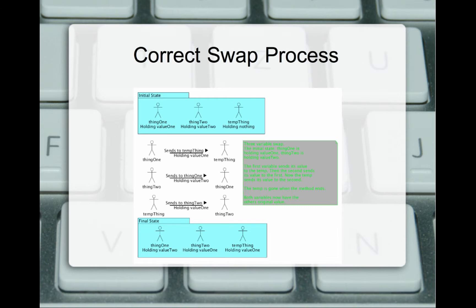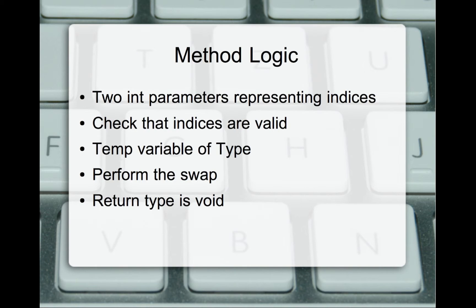Because it doesn't exist after that method. It's a temporary variable. It'll only exist inside there. We have some logic that goes behind that. Our method is going to have two parameters. They're ints. They represent the spots that we're dealing with.